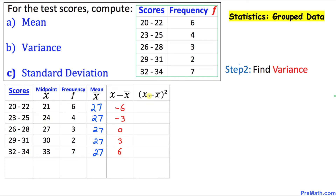In the next column, we square whatever we got in the previous column. So negative 6 squared is 36, negative 3 squared is 9, 0 squared is 0, then 9, and then 36.